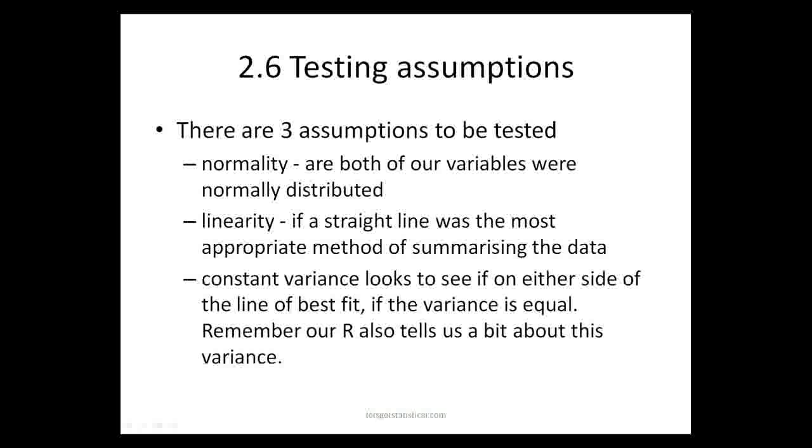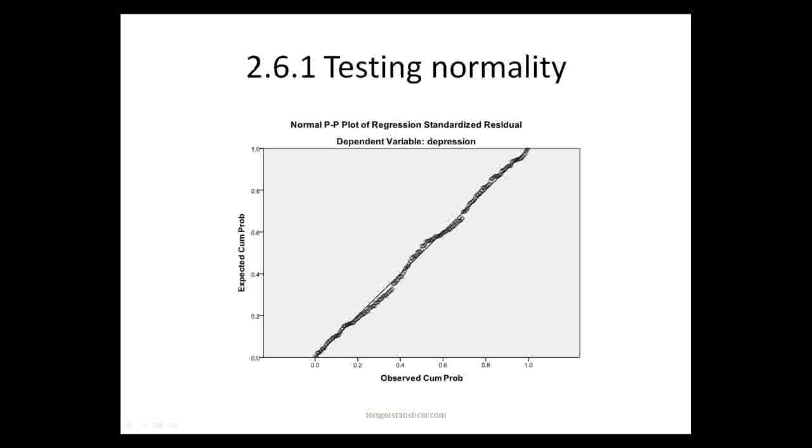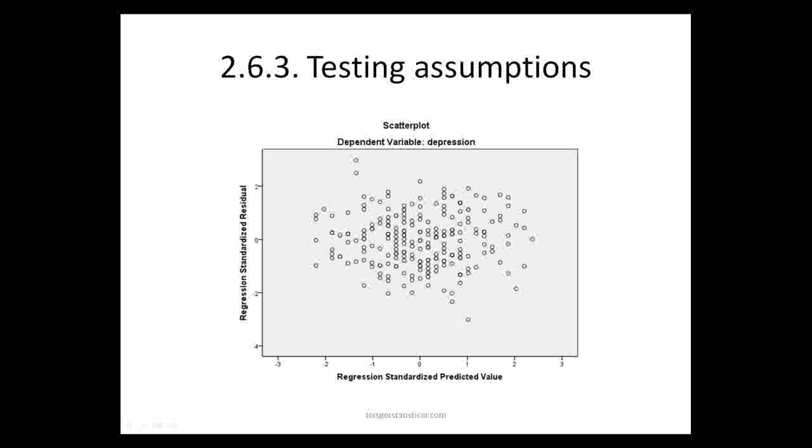There are three assumptions we need to test in linear regression. The first is normality, the second is linearity, the third is constant variance. This is to test normality, we're looking for snaking around the line. In this case there is a bit of snaking but not a lot. We will let this slide, we're looking for major snaking.